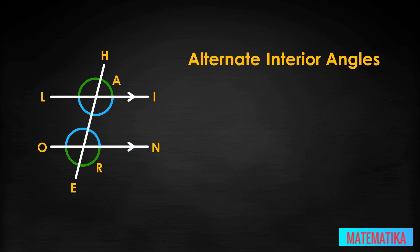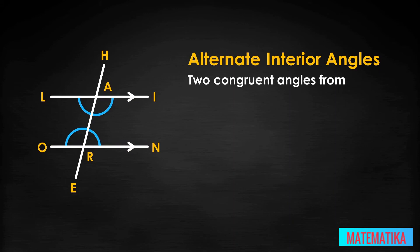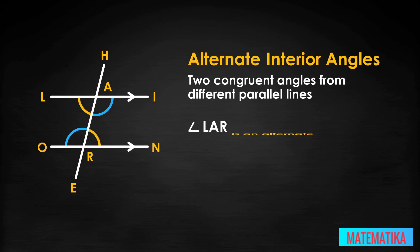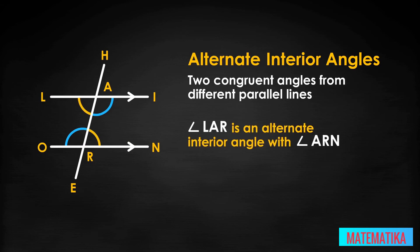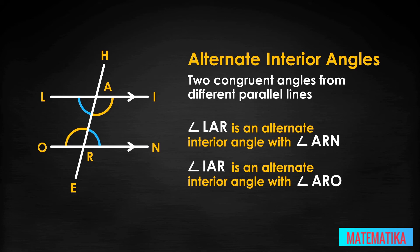Today we are only interested in the four interior angles. Two of the interior angles are built using the top parallel line LI, and two are built using the bottom parallel line ON. Alternate interior angles are two congruent angles from different parallel lines — one from LI, one from ON. Angle LAR is an alternate interior angle with angle ARN, and angle IAR is an alternate interior angle with angle ARO.